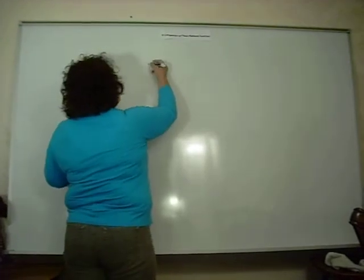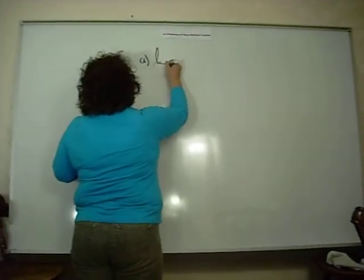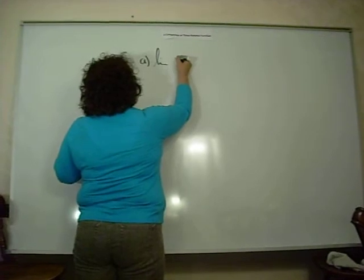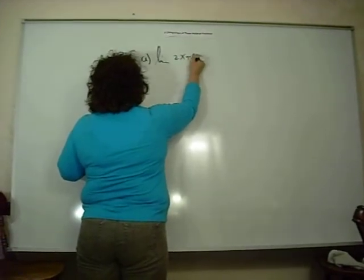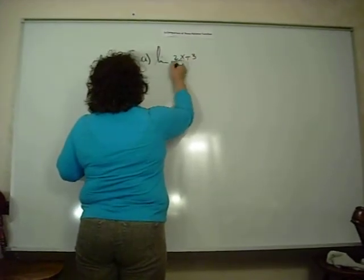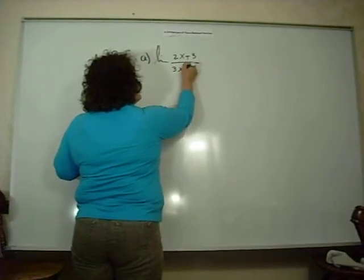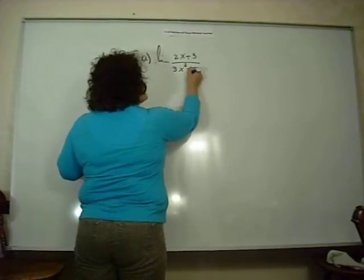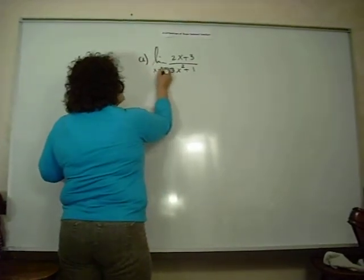For example, let's look at Example A. If I have the limit of two x plus three over three x squared plus one, as x approaches infinity.